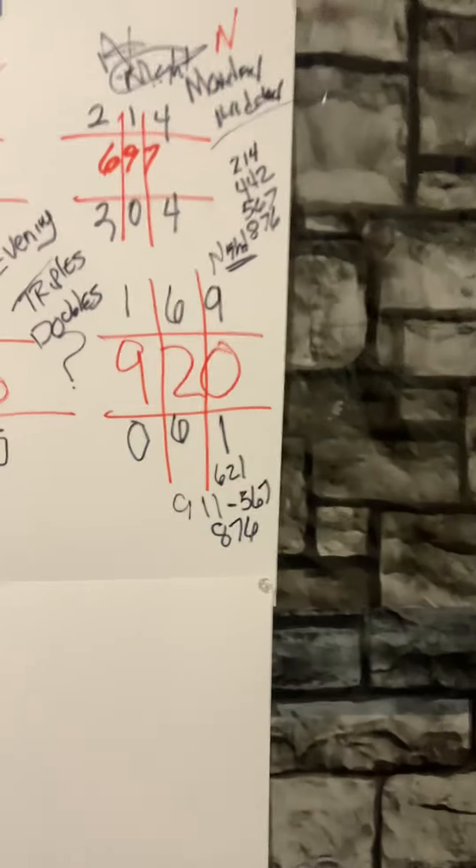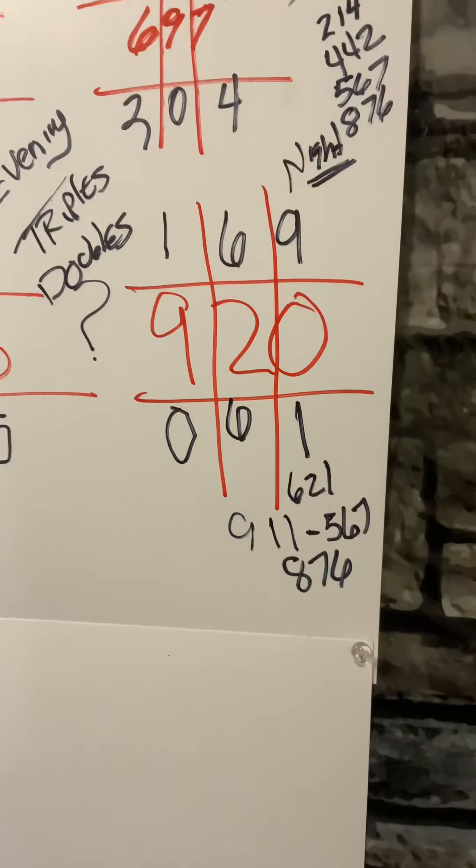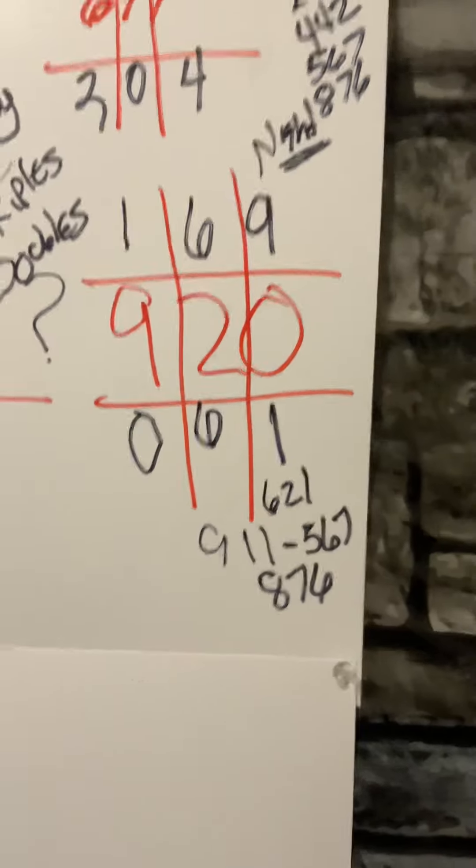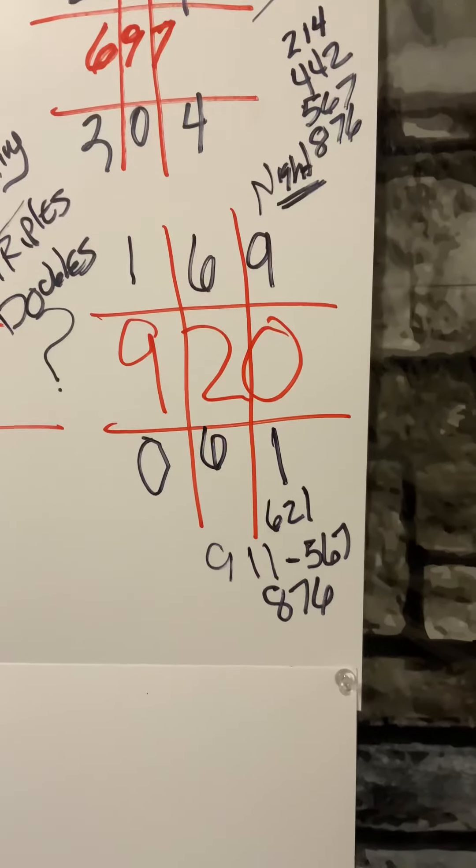So we're going to come over here to what came out tonight - 920. Out of 920, I see 9, 11, 6, 21.